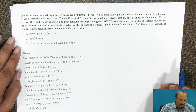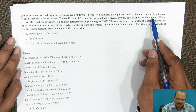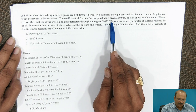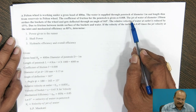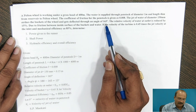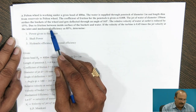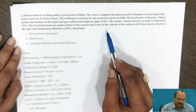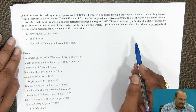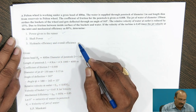A Pelton wheel is working under a gross head of 400 m. Water is supplied through a penstock of diameter 1 m and length 4 km from the reservoir to the Pelton wheel. The coefficient of friction for the penstock is 0.008. The jet of water diameter 150 mm strikes the bucket of the wheel and gets deflected through an angle of 165 degrees. The relative velocity at the outlet is reduced by 15% due to friction. The bucket velocity is 0.45 times the jet velocity, and mechanical efficiency is 85%. Determine power given to the runner, shaft power, hydraulic efficiency, and overall efficiency.